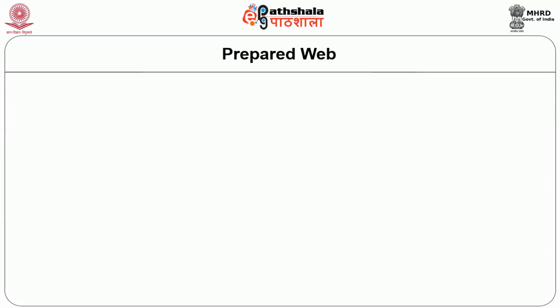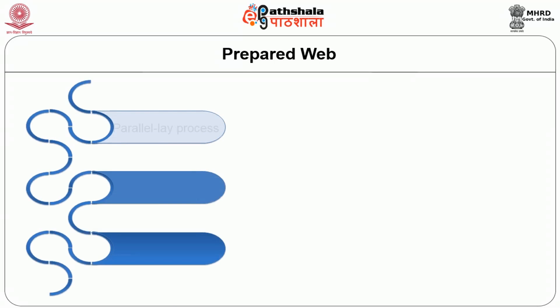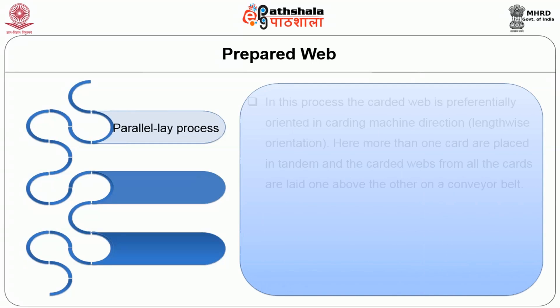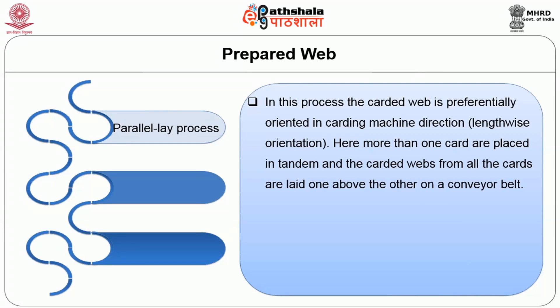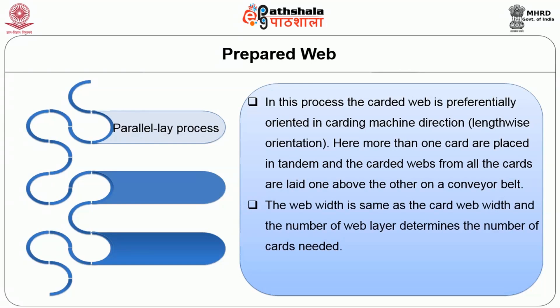The prepared web is stacked in three ways: the parallel-lay process, cross-lay process and the perpendicular-lay process. Parallel-lay process is also called longitudinal layering. In this process, the card web is preferentially oriented in the carding machine direction — lengthwise orientation. Here, more than one card are placed in tandem and the card webs from all the cards are laid one above the other on the conveyor belt. The web width is similar to the card web width and the number of web layers determines the number of continuous cards required. Continuous methods are mostly used in the parallel-lay process.